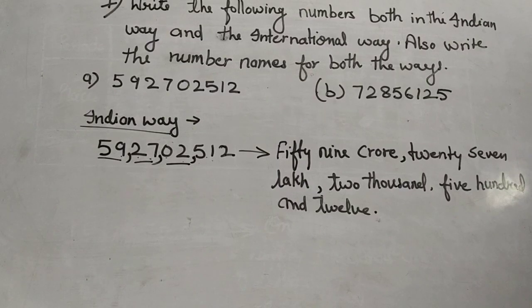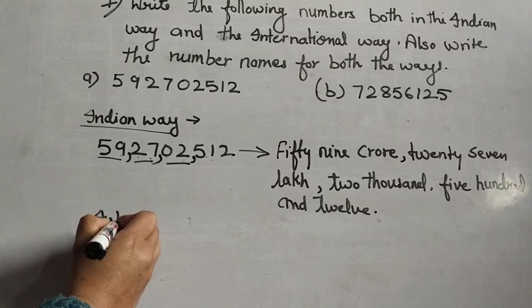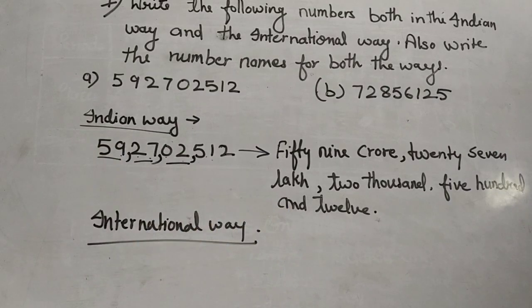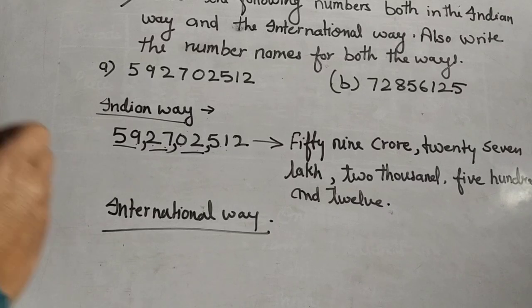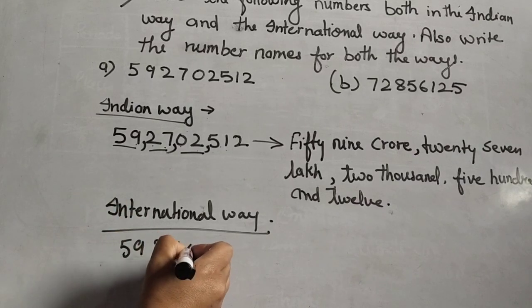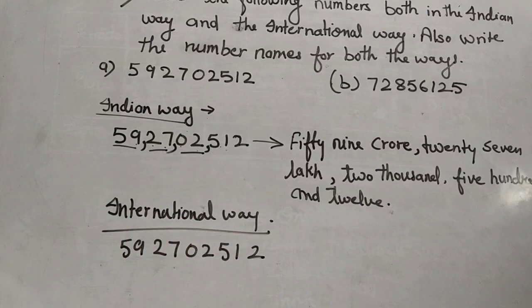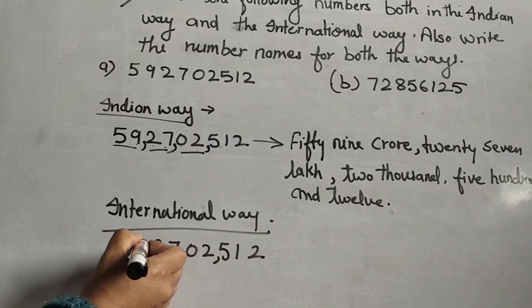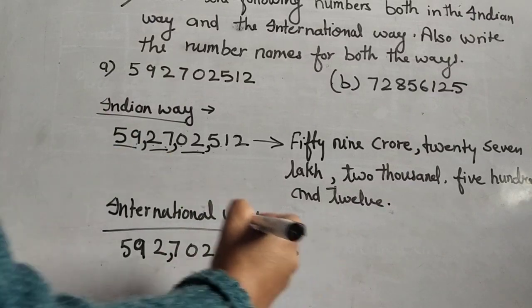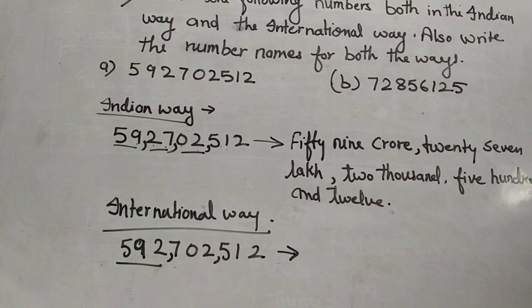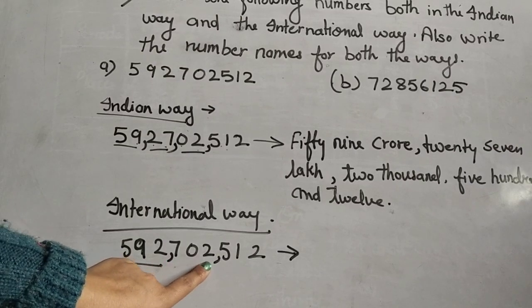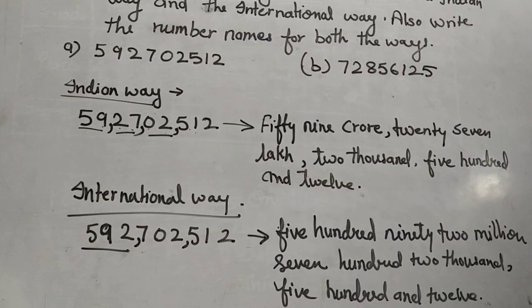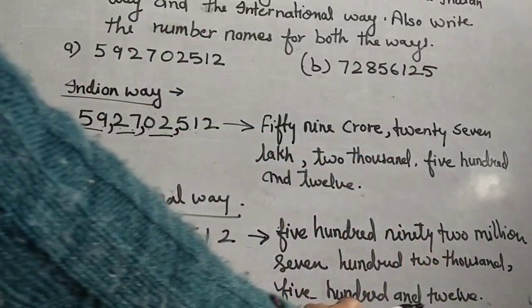Now the same number written in the international way. Commas are placed before every three digits from the right: ones, tens, hundreds, thousands, ten thousands, hundred thousands, millions, ten millions, hundred millions. We read it as: five hundred and ninety-two million, seven hundred and two thousand, five hundred and twelve.